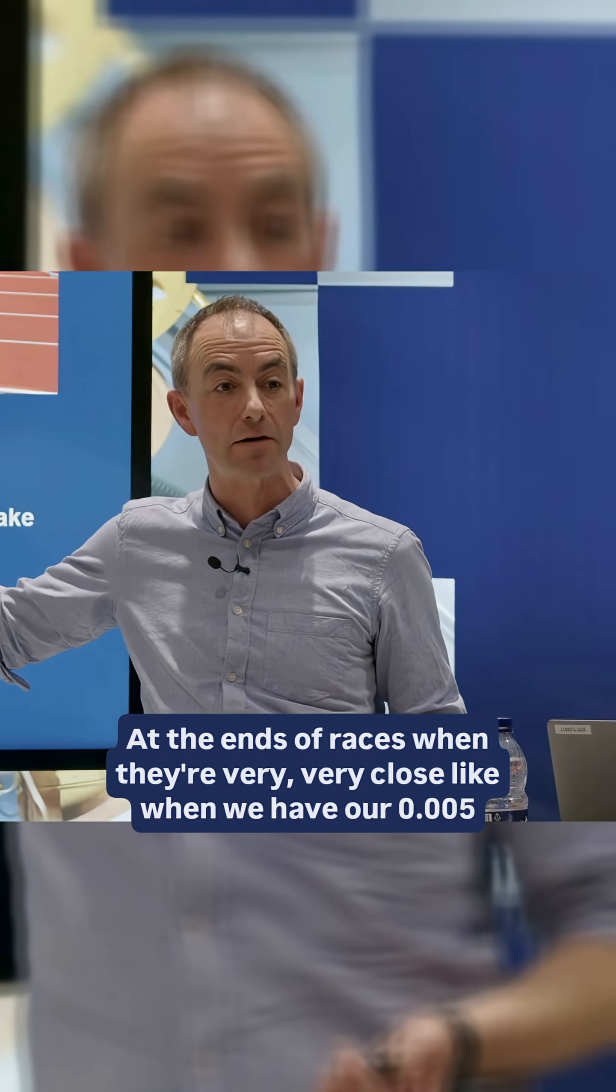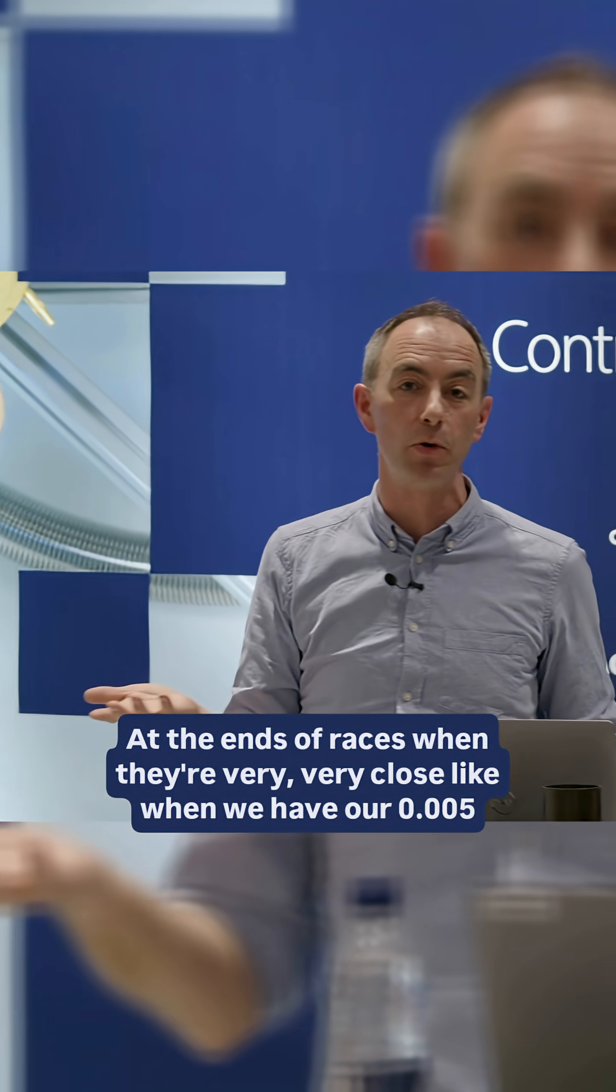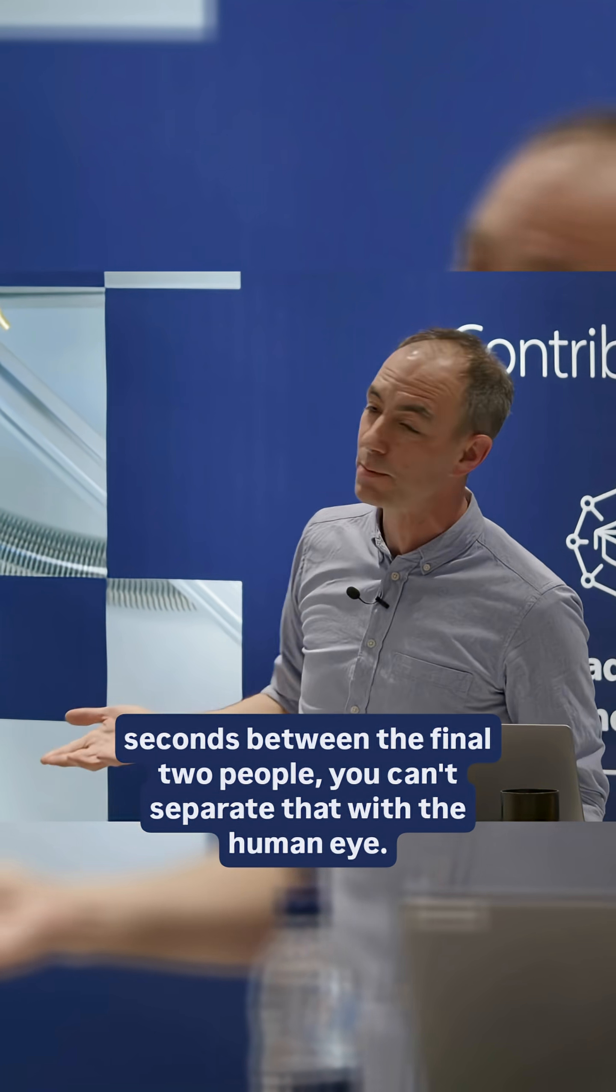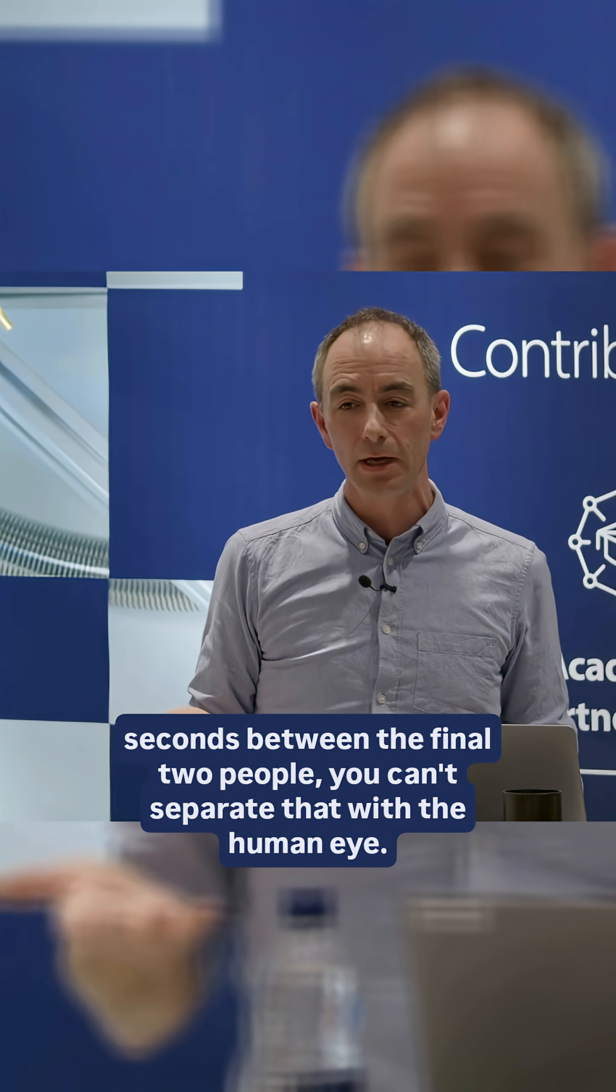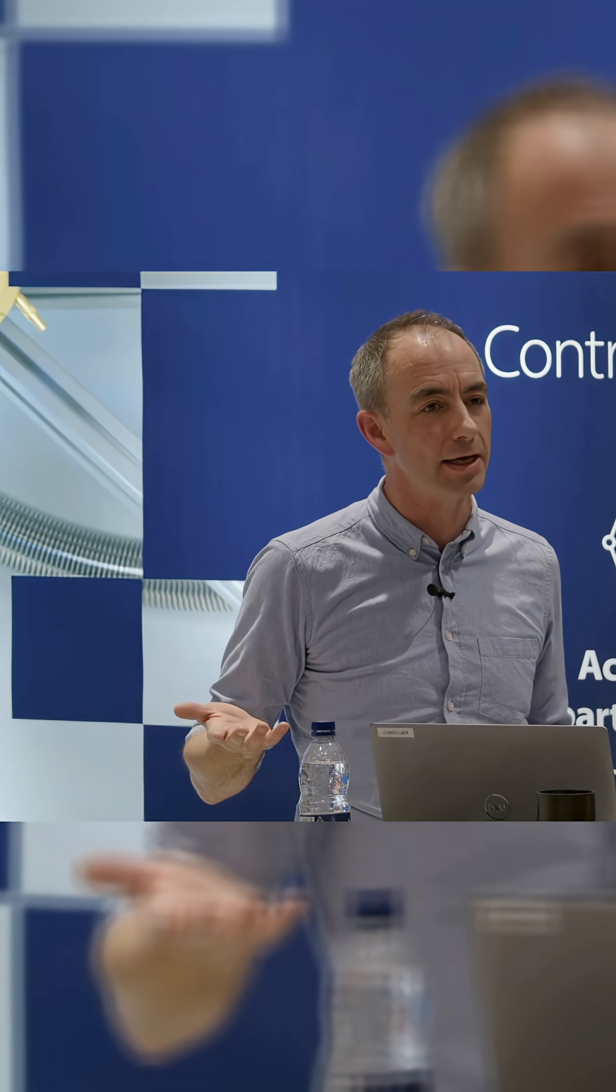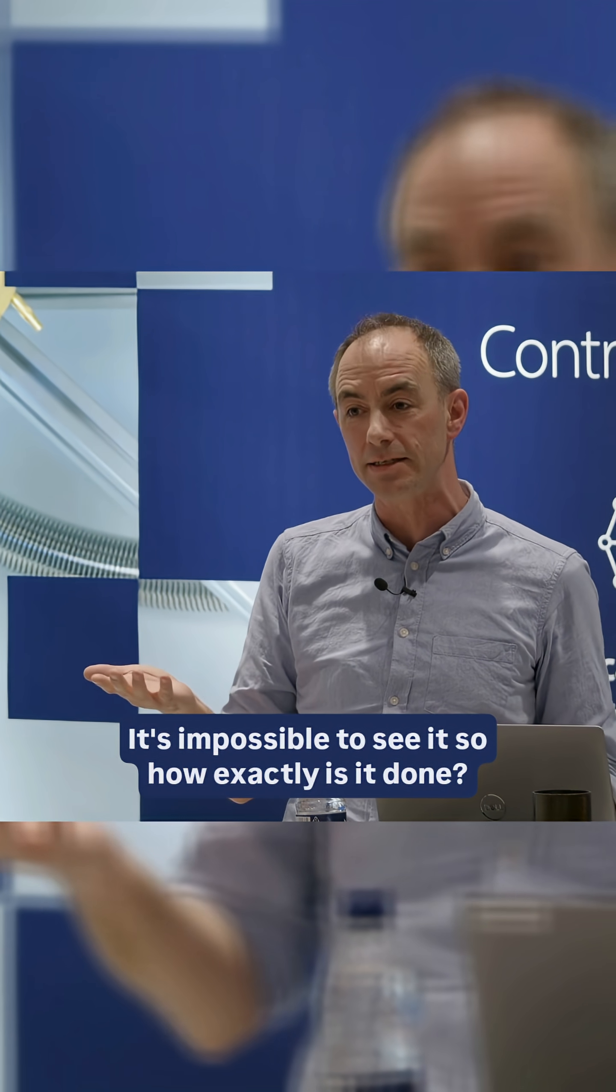At the ends of races when they're very, very close, like when we have .005 seconds between the final two people, you can't separate that with the human eye. It's impossible to see it, so how exactly is it done?